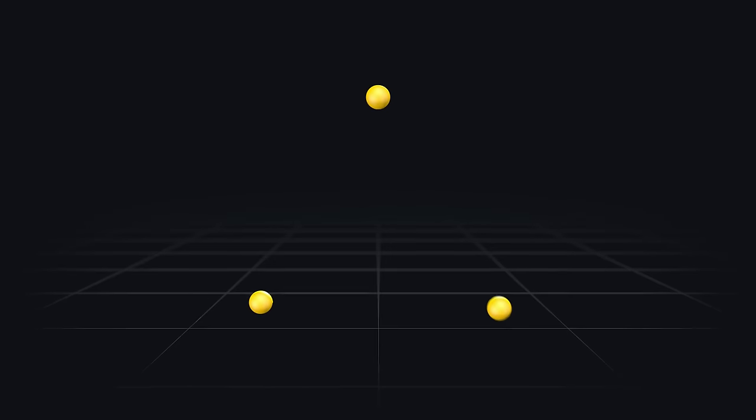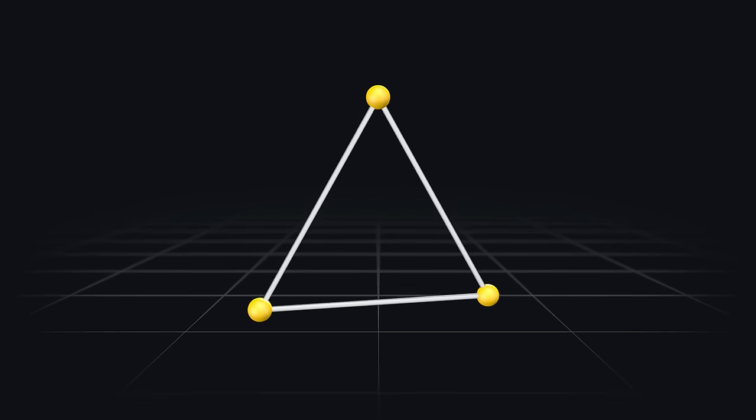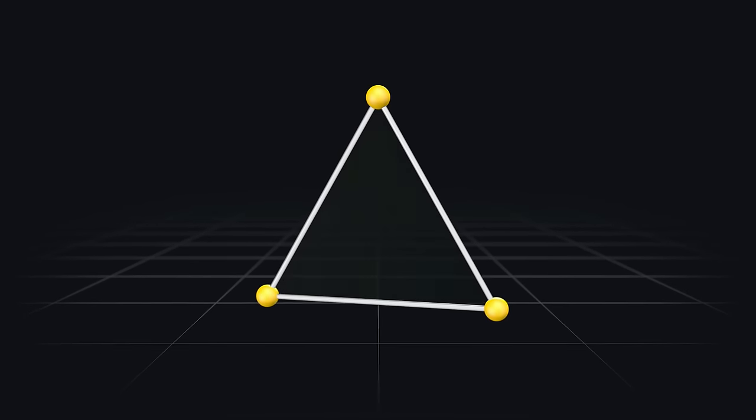In 3D software, points are also known as vertices and can be connected through lines or edges. If we connect three vertices together, we can make a polygon.